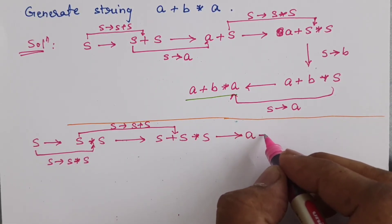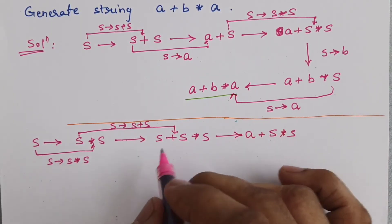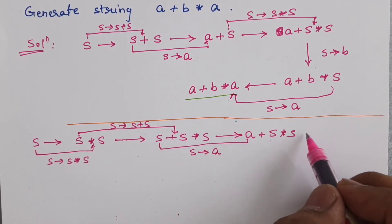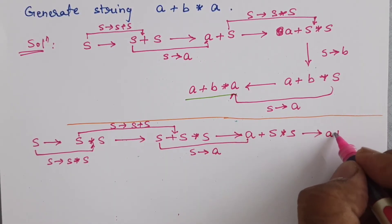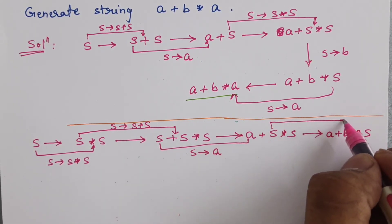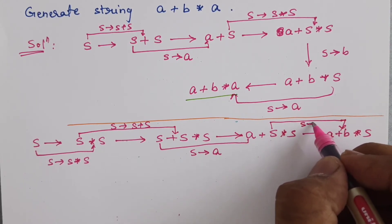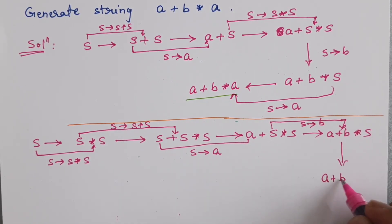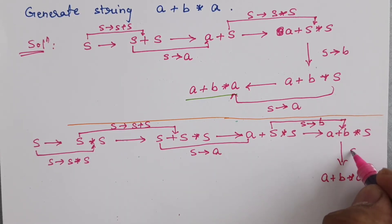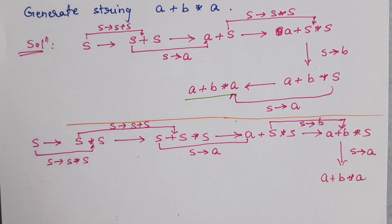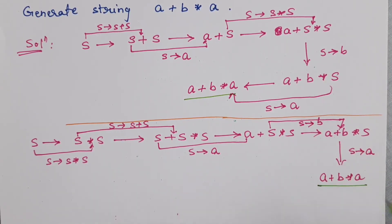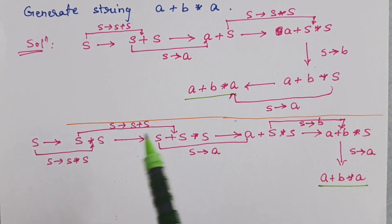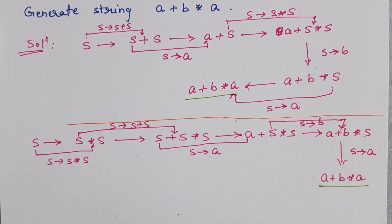Now I just have to convert the first S to a, the second to b, and the third to a. So it becomes a+S*S, using S → a, then a+b*S using S → b, and finally a+b*a with S → a. So I am able to generate the word a+b*a in a second way. There are at least two derivation trees, and we can find a third possible way as well — I leave that for you to try at home.